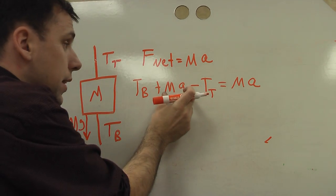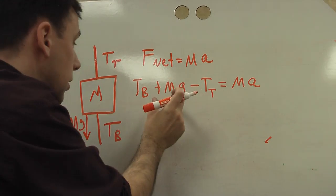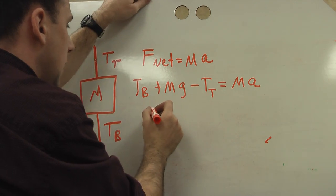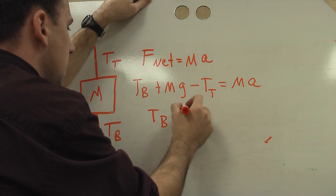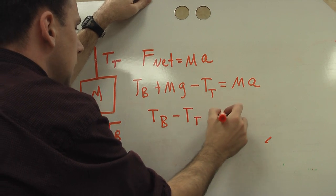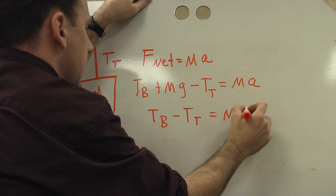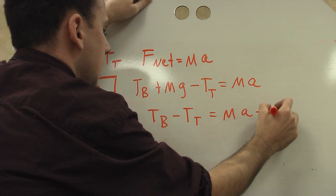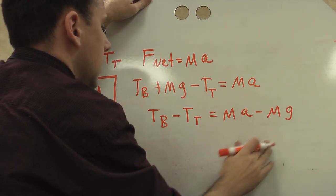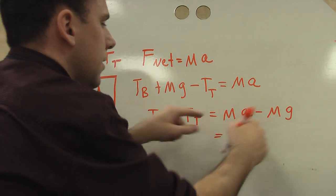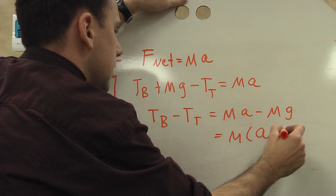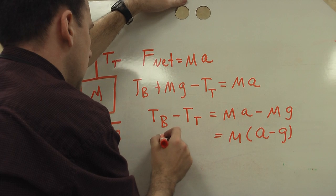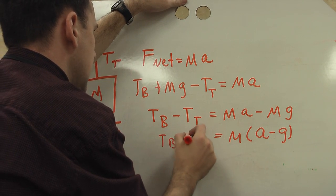So this is going to be the tension top. Now all I'm going to use is I'm going to bring this over. So I'm just going to subtract this. I'm going to get TB, meaning the bottom tension, minus the top tension, equals ma minus mg. Well, I'm going to factor out the m, m times (a minus g) equals TB minus TT.